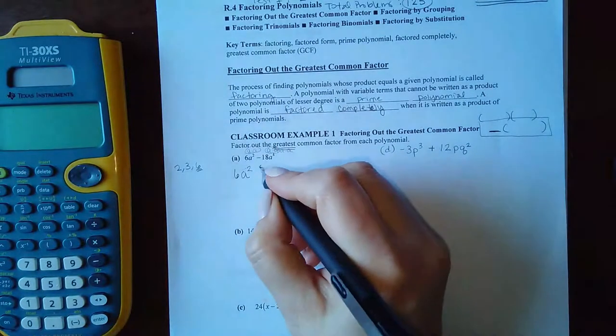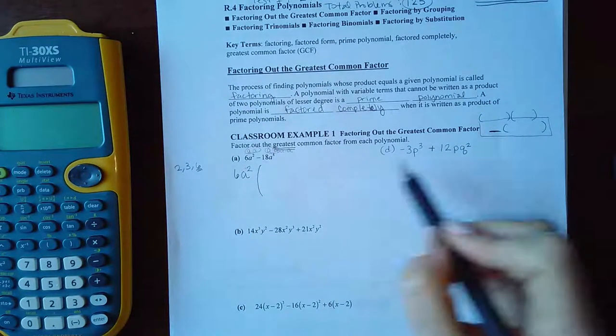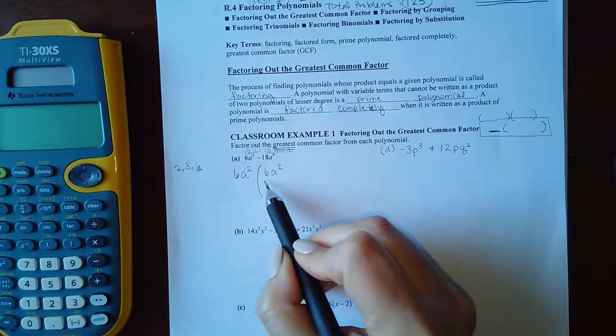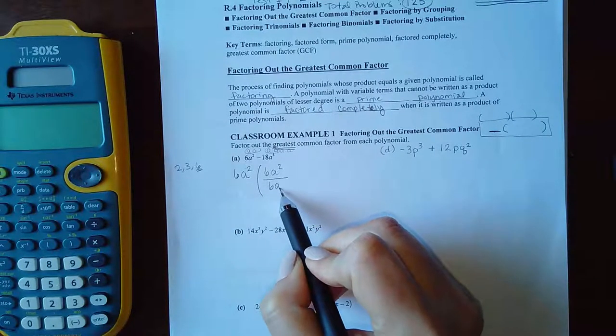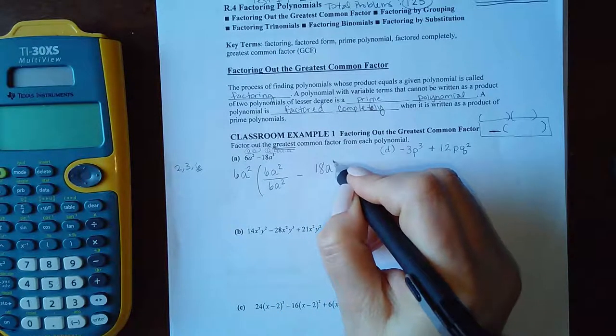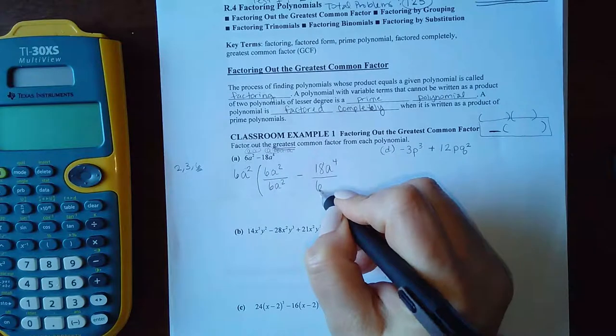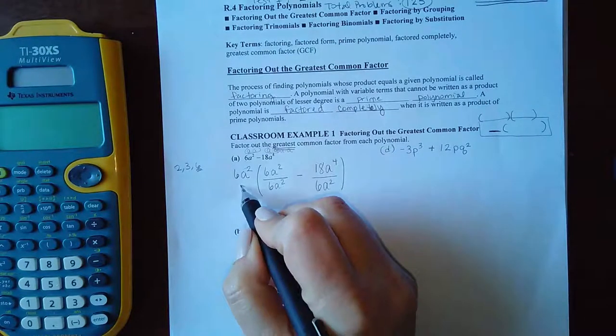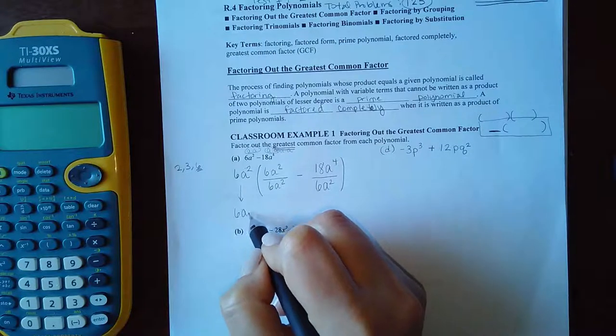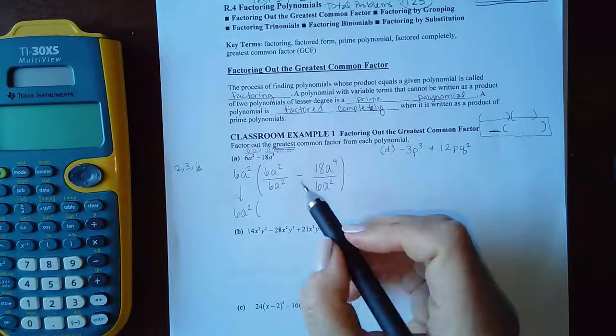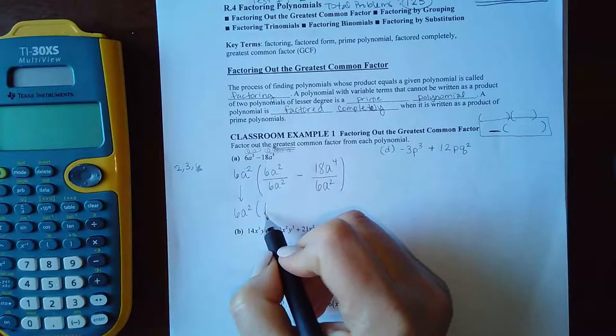So the most I could take out that they have in common is two of them. Now, how do I figure out what goes inside the parentheses there? What you do is you take the first term and divide it by the monomial you chose to factor out. Take the second term and divide it by the monomial you chose to factor out.